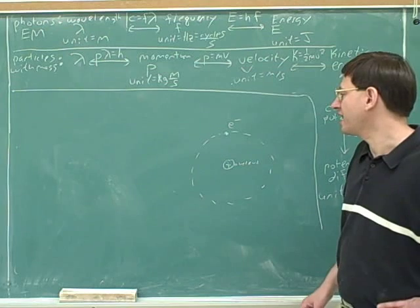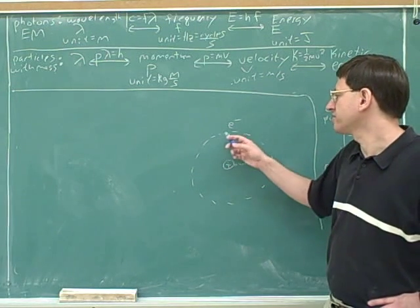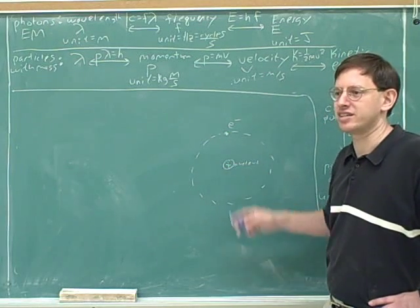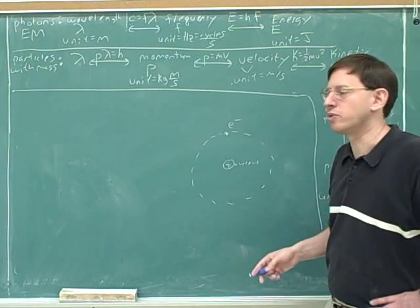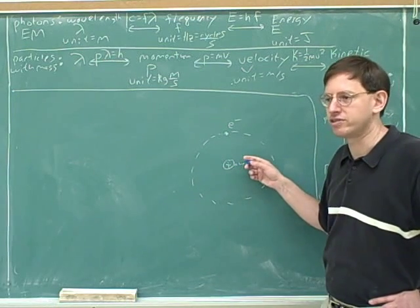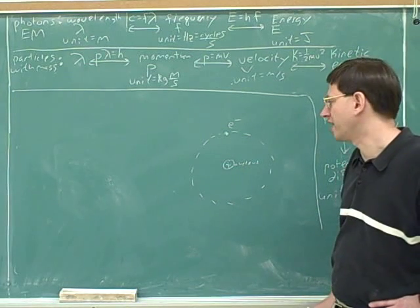However, it turns out that, as is the theme for what we're talking about today, the energy levels and the radii of electrons in the nucleus are quantized. That is, the electron cannot take on any possible orbit. There's only certain orbits that are allowed to an electron. It's as if there was only certain orbits that are allowed to a planet.